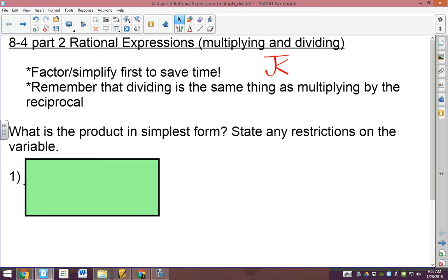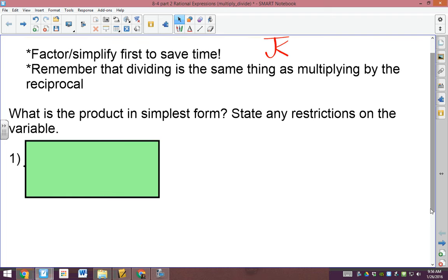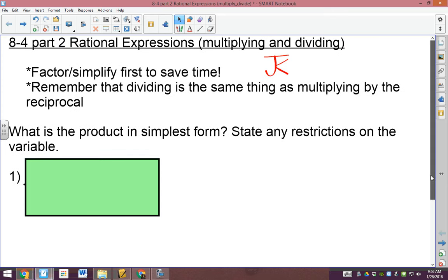Okay, 8-4, part 2, rational expressions, multiply and divide. Part 1 was simplified. 8-5 is the next one. Factor and simplify first to save time - we're all about saving energy. And remember that dividing is the same thing as multiplying by the reciprocal. You will need that in future lessons, so pay close attention.